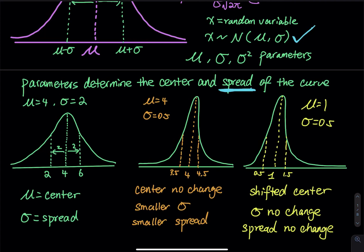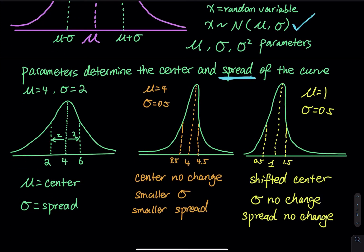The mu determines the center of the mountain or the center of the bell. If you use a smaller sigma you get a smaller spread and a taller graph. Comparing the second and third graphs — both have sigma = 0.5, so they are equally tall with the same spread — but the second graph has mu = 4 while the third has mu = 1. Changing the mu shifts the center left or right without changing the spread. Changing the sigma makes the graph either wide and short or narrow and tall. That is why we call them parameters: they determine the center and spread of the curve.